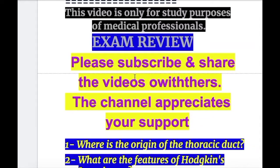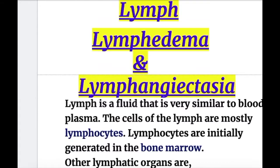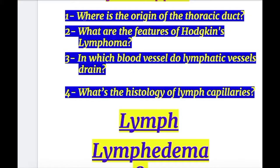In this video, we'll do an exam review on lymph, lymphedema, and lymphangiectasia. But first, a few important exam questions. Question number one: where is the origin of the thoracic duct? Number two: what are the features of Hodgkin's lymphoma? Number three: in which blood vessel do lymphatic vessels drain? And number four: what's the histology of lymph capillaries?